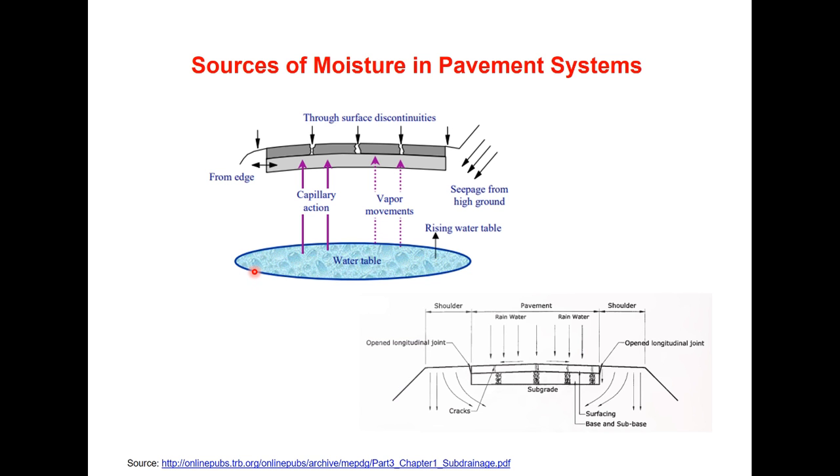Now moisture in the subgrade and the pavement can come from many different sources. It may seep up from the water table either through capillary action or through vapor movements or may flow laterally from pavement edges and side ditches or it may through surface infiltration through the joints, cracks and shoulder edges and some studies have shown that up to 40 percent of rainfall enters the pavement structure.